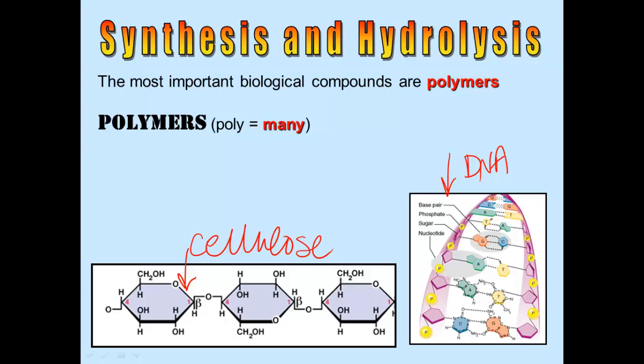Polymers mean many molecules strung together. So you can see here we've got a sugar strung together with another sugar, strung together with another sugar, and it would go on for much longer than that. That would create a polymer called cellulose.